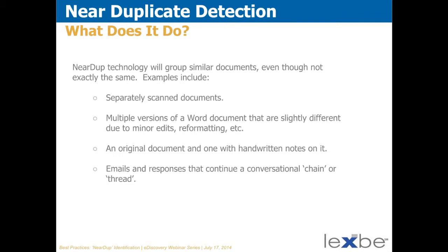In getting similar documents together, near-dupe helps in a variety of circumstances. One example: separately scanned documents — scan it once, scan it again — they'll show up as near-dupes once OCR runs on the text. Multiple versions of a Word document that are slightly different due to minor edits or reformatting will come up together as groups. You can have a merger agreement with edits, and those will be grouped together. You can also have an original document and another version with handwritten notes on it — not exact duplicates, but they would come up together as a group.